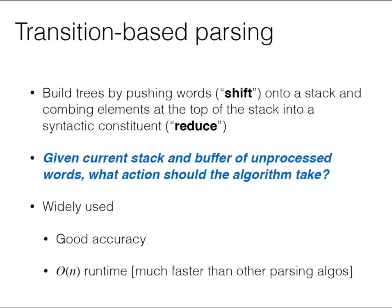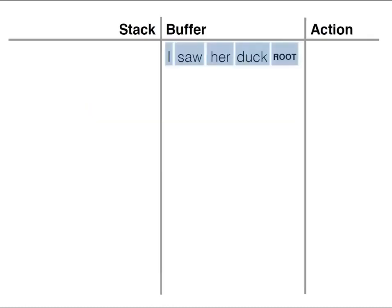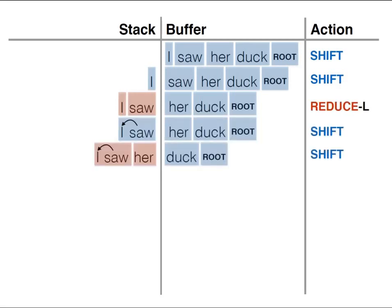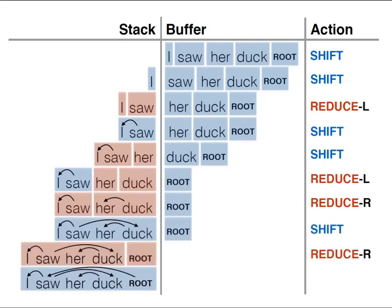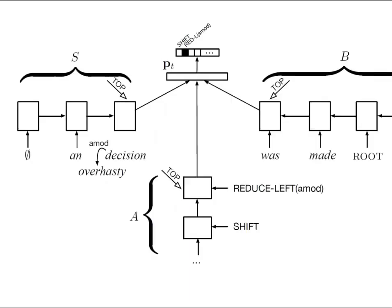I'm going to skip the next section on dependency parsing — those slides are in the notes. Briefly: there's another version of dependency parsing where rather than building full tree structures, you build things that look like arrows where every word points to the thing it modifies, with another similar sequence of actions. For those interested in changing complex structure-building problems into sequences of actions, those slides give two examples of this.